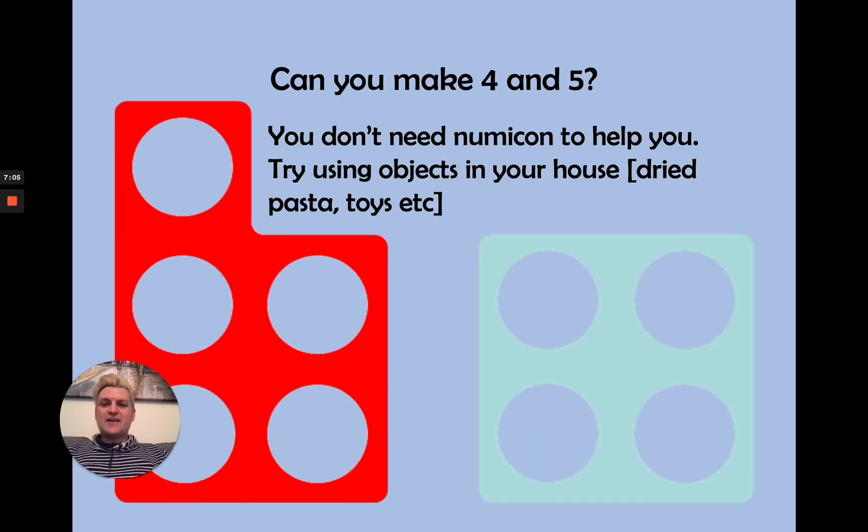So I'd like you to have a go at trying to make four and five. You don't need to have Numicon to help you. You might have some objects around your house. And I've said that maybe you might have pieces of dried pasta. You might have some toys. And you can try and split them up into some different groups. So you might have five pieces of pasta. You put three on one side and two on the other.